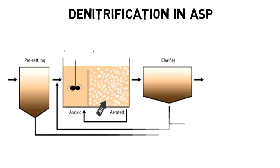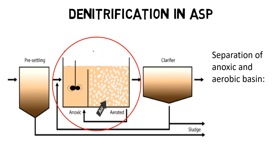The activated sludge process usually separates the anoxic basin from the aerobic basin, either by building two different tanks or by creating different zones within one basin with controlled aeration or by on-off operation of aerators.